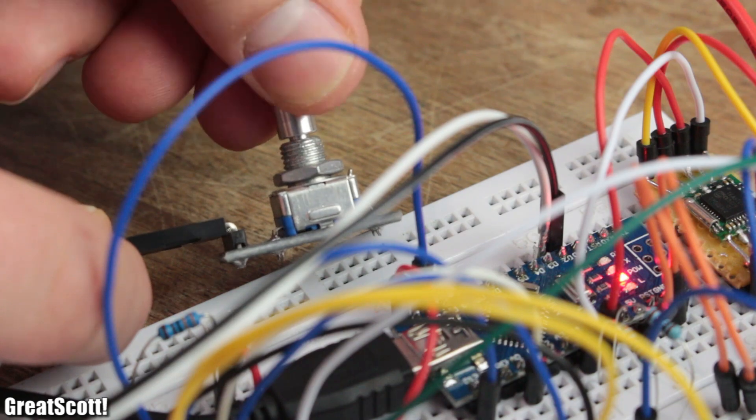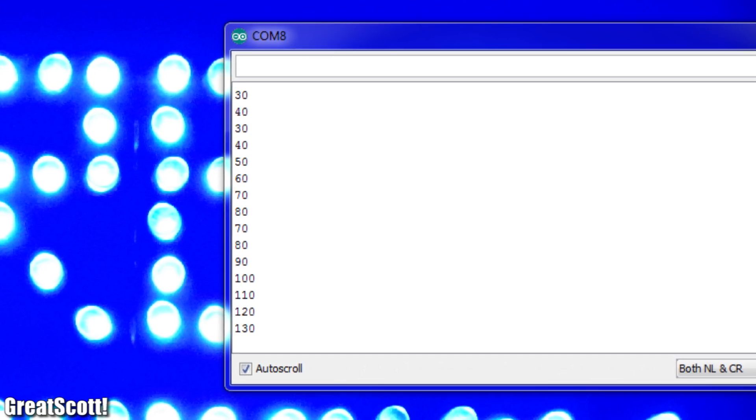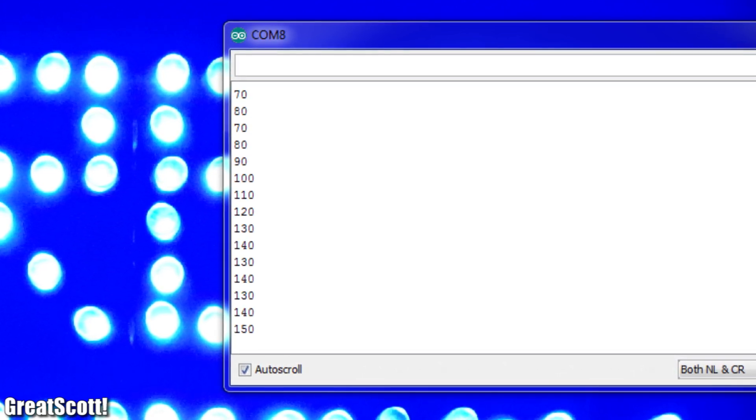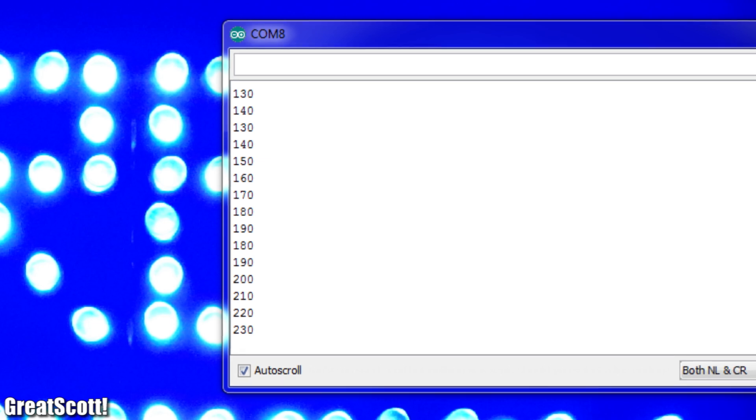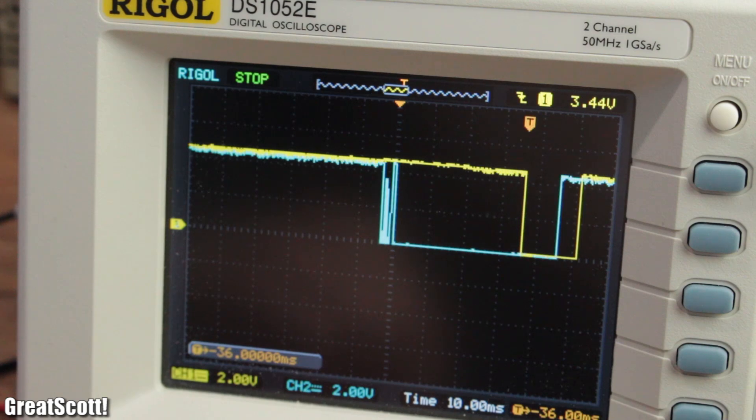This way we can increase or decrease the volume value which is shown here through the serial monitor. But as you might have already noticed, sometimes the value jumps up or down many times through one simple turn, which is not right. This occurrence is called bouncing.